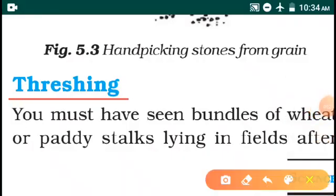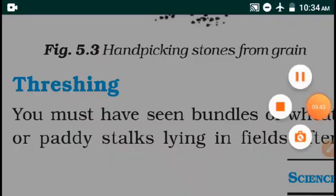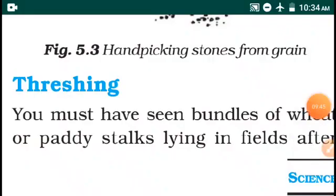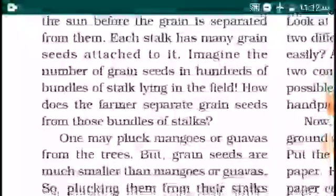Threshing — adithal. You must have seen bundles of wheat or paddy stalks lying on the land or field after harvesting. Stalks are dried in the sun before the grains are separated from them. Each stalk has many seeds attached to it.